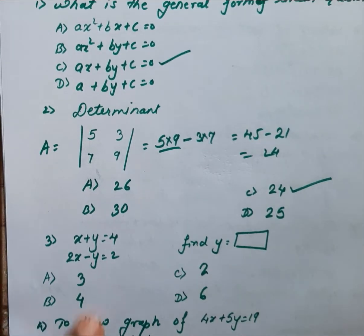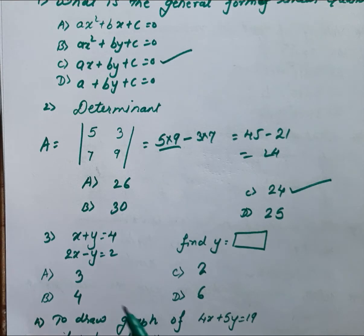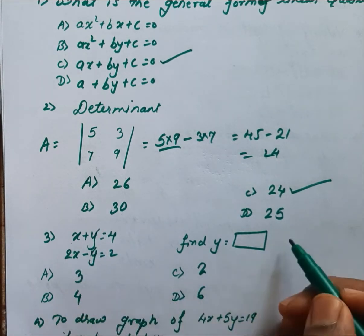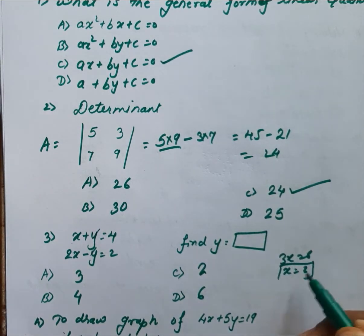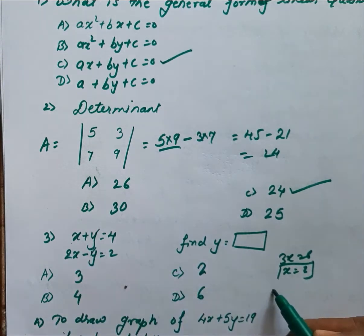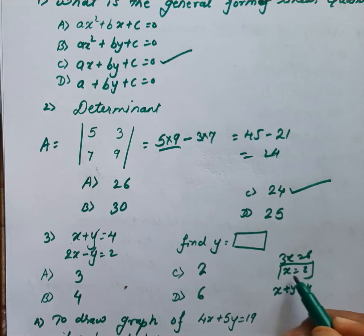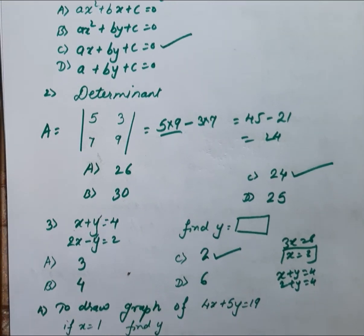Next question: X + Y = 4 and 2X − Y = 2. We have to solve by the elimination method. Adding the equations, +Y and −Y cancel, giving 3X = 6, therefore X = 2. To find Y, substitute X = 2 into X + Y = 4: 2 + Y = 4, therefore Y = 2. So our answer is C, Y = 2.